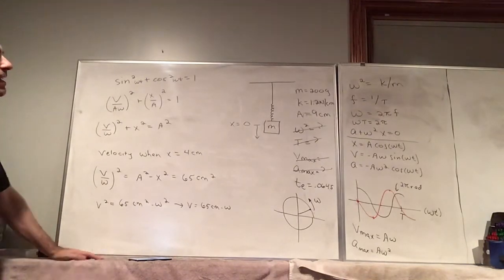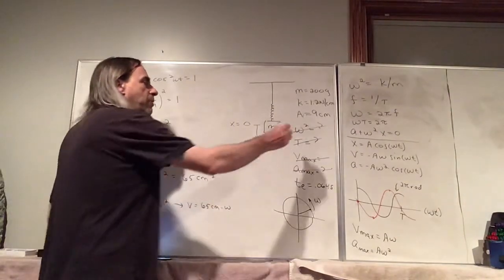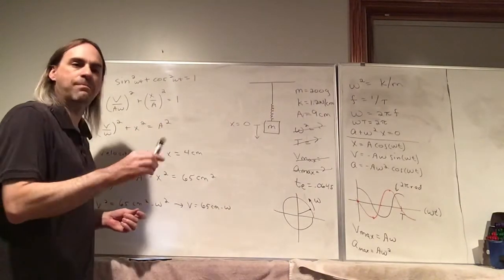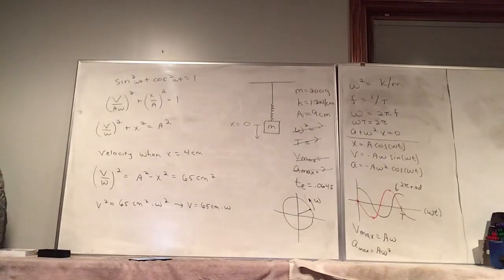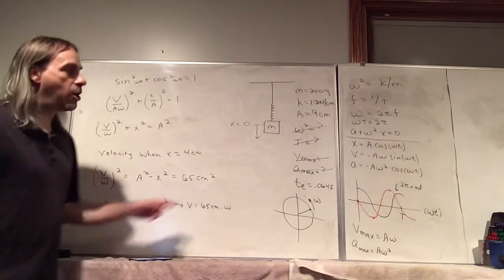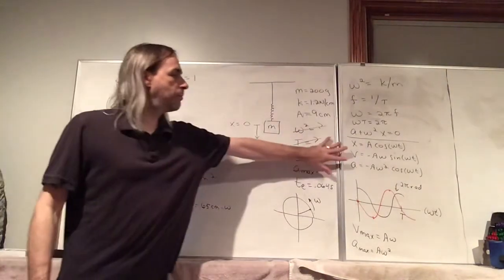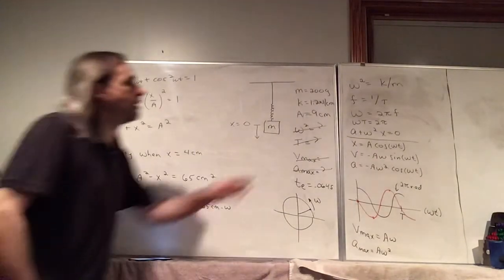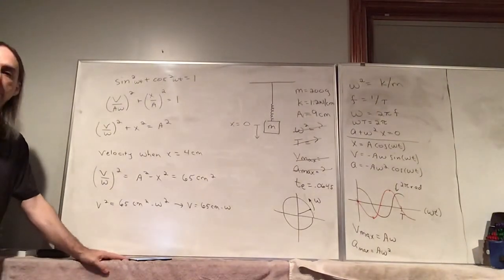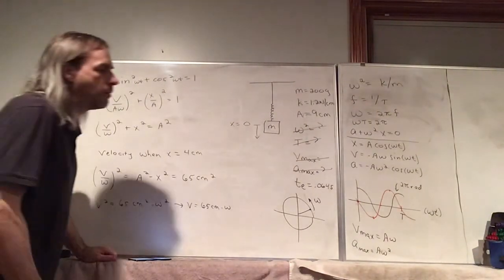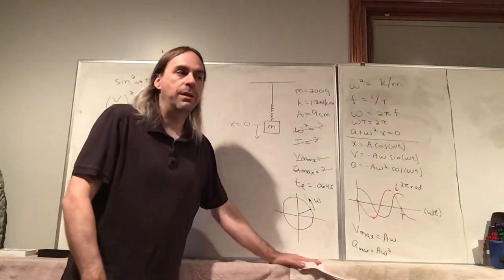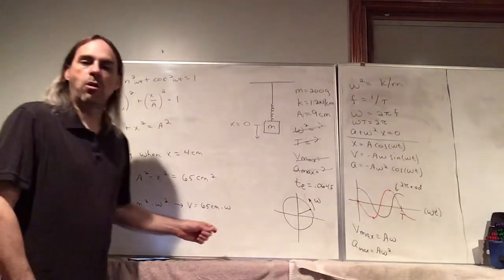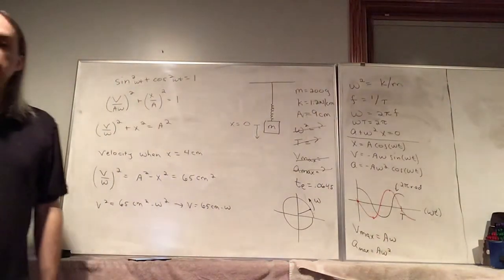Notice we didn't actually draw the auxiliary circle or decompose vectors — we do that once to show how to solve this kind of problem, and then we can just use the results directly. So mainly we get the angular frequency and everything follows from that. SHM is very important in physics generally, and next we'll look at one more example, but that will be a separate video.